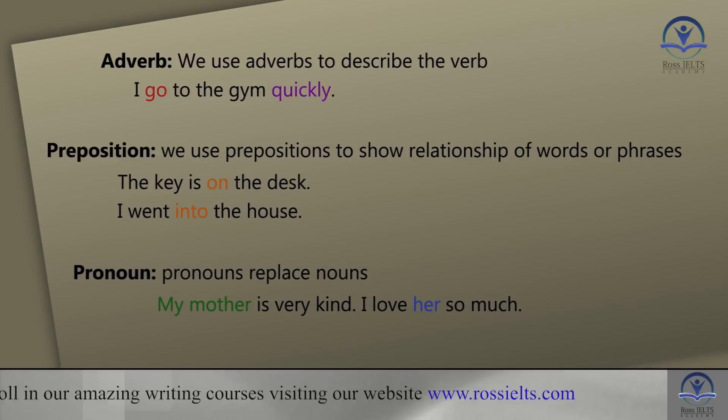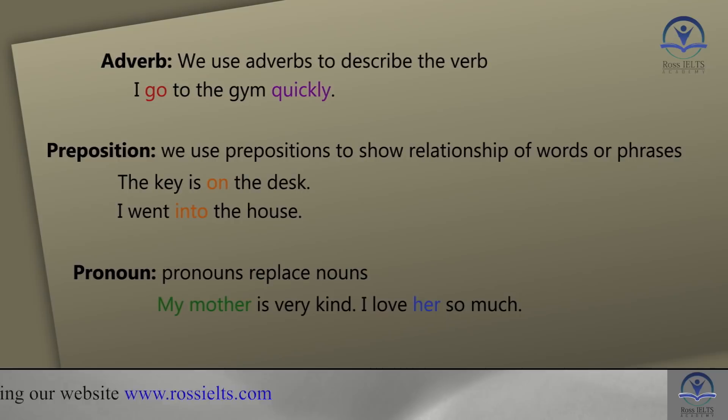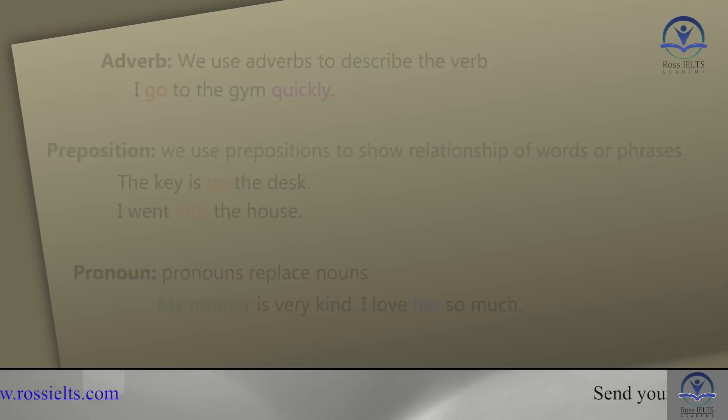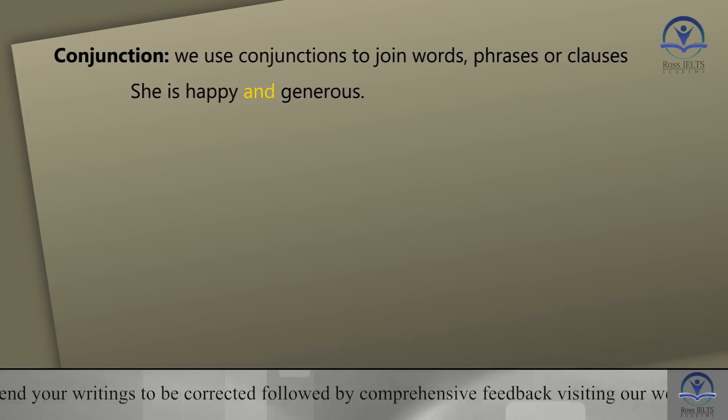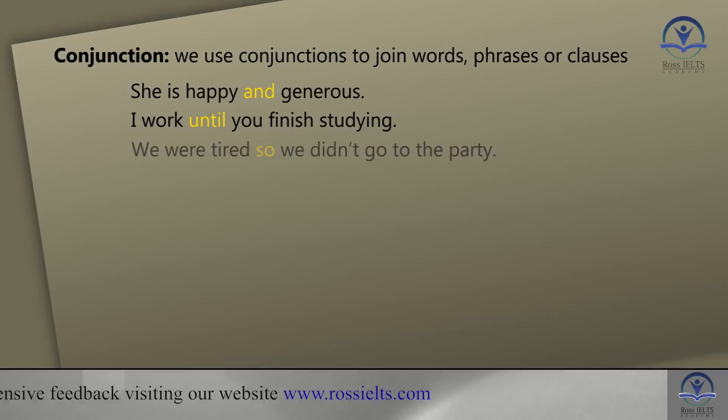For example: my mother is very kind — I love her so much. 'My mother' is the subject, and the second time I refer to her I say 'her' instead of repeating 'my mother.' The next one is conjunctions. We use conjunctions to join words, phrases, or clauses. For example: she is happy and generous — 'and' is the conjunction. Or: I work until you finish studying. Or: we were tired so we didn't go to the party — 'so' is another conjunction.